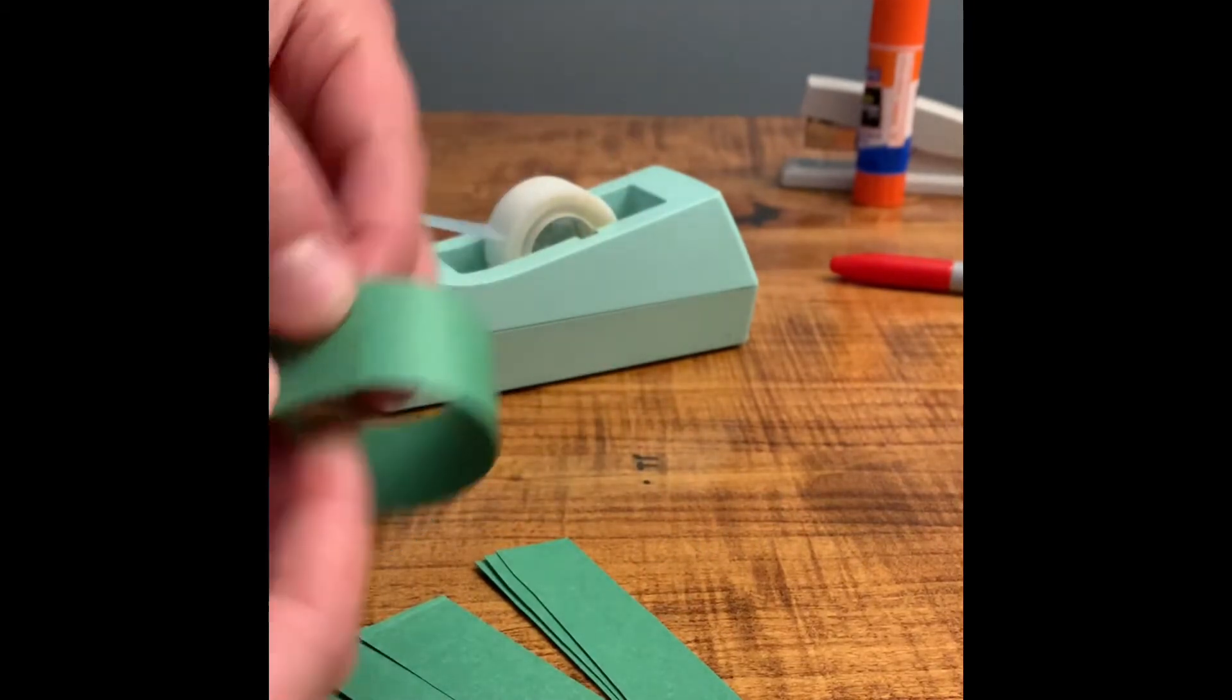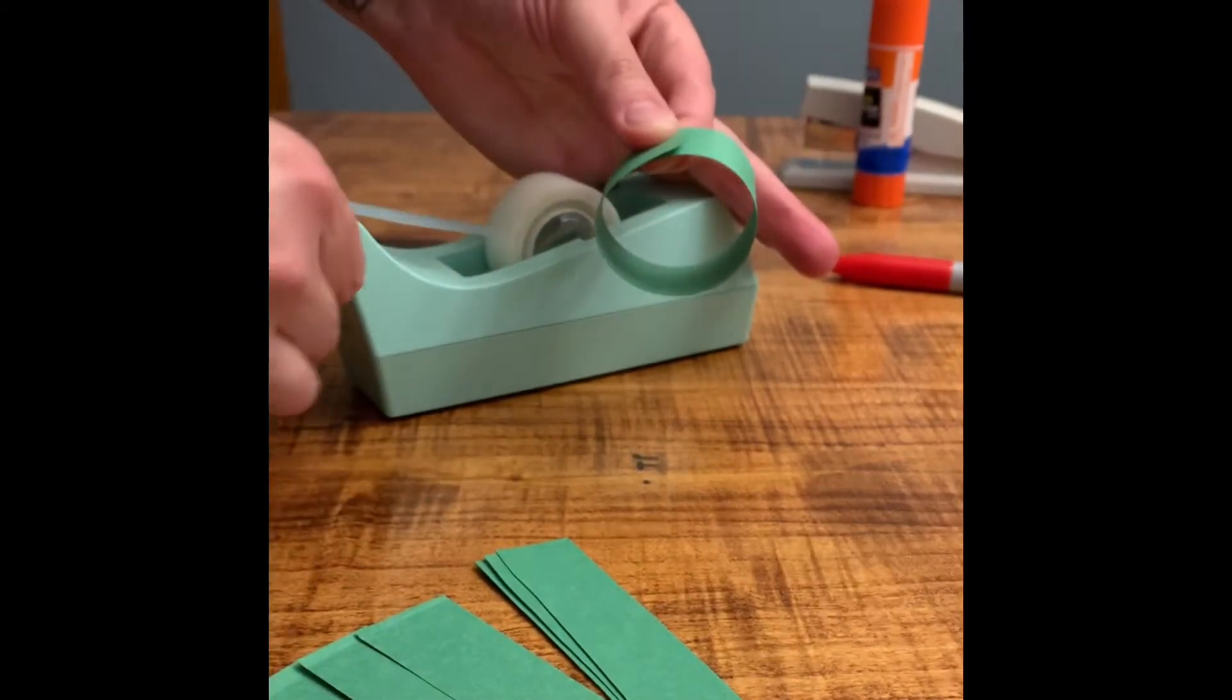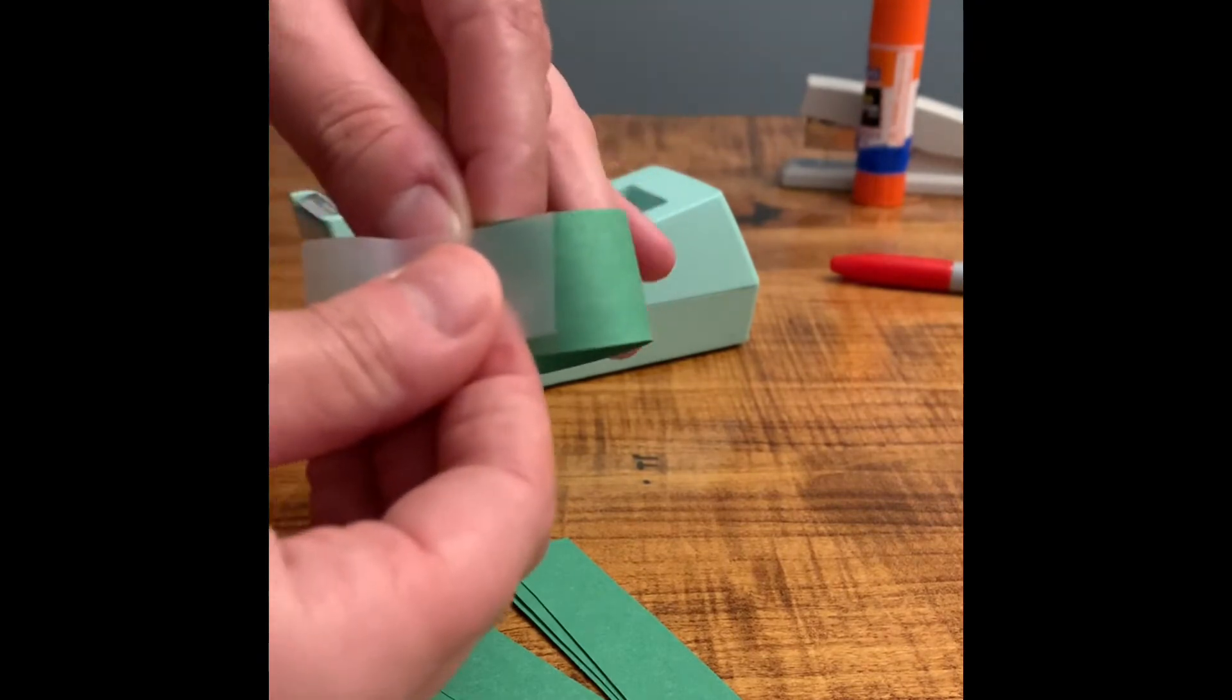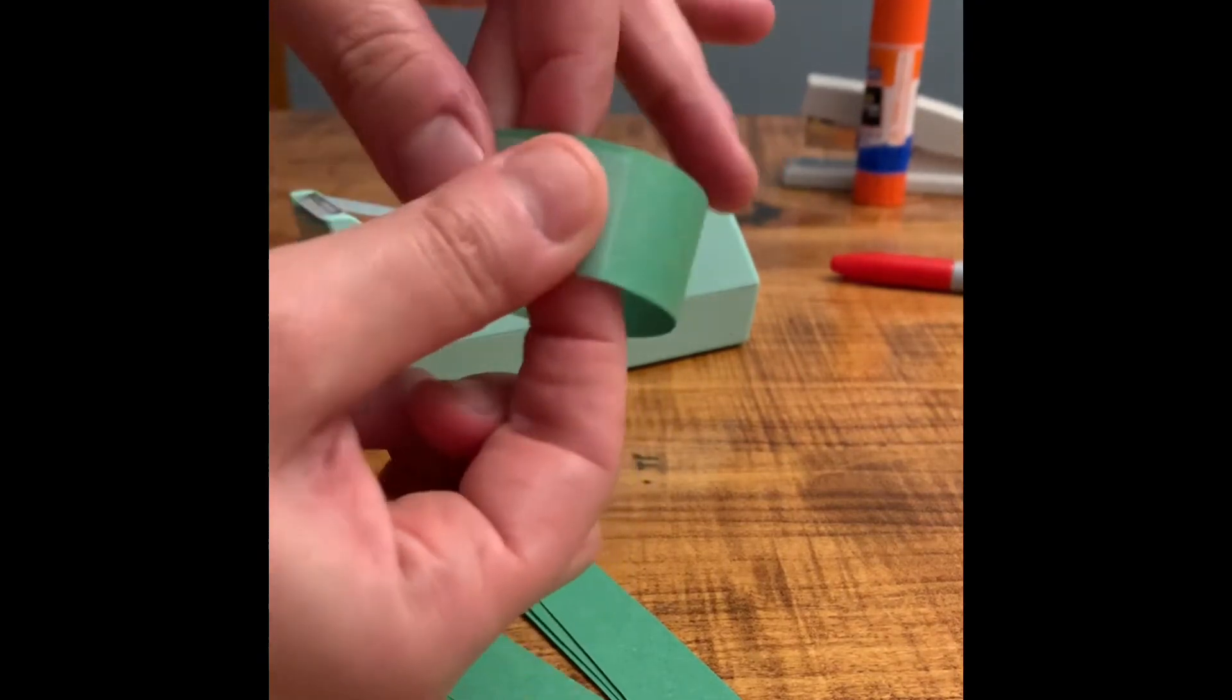You'll take your first strip of paper and make it into a loop. You can secure it using tape, glue, or a stapler.